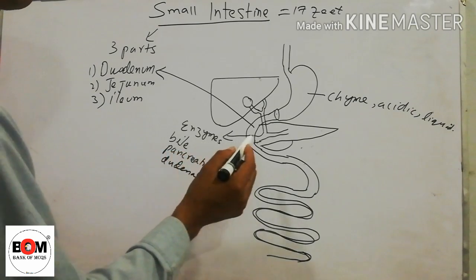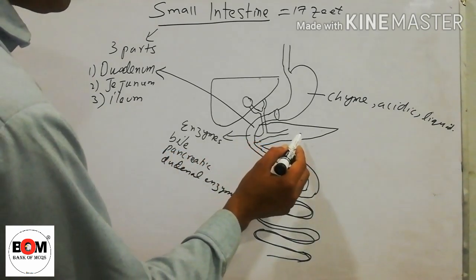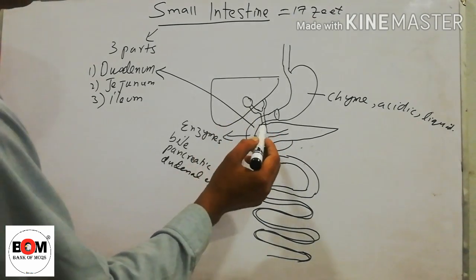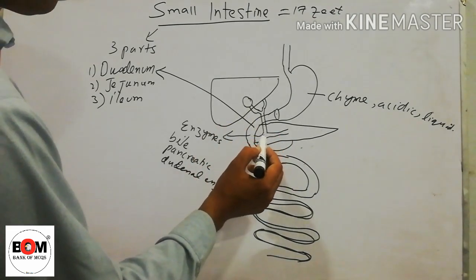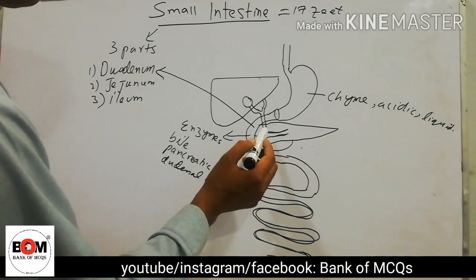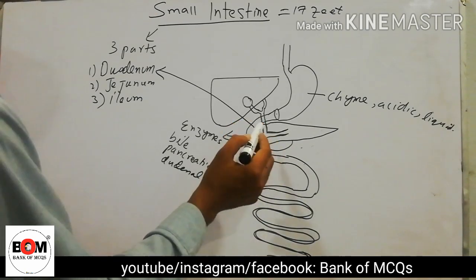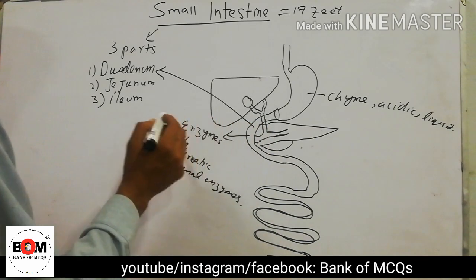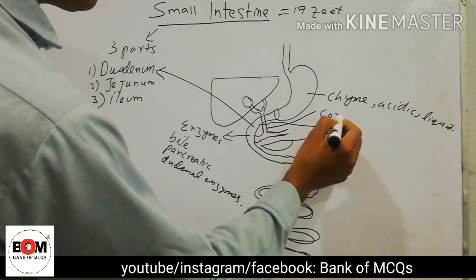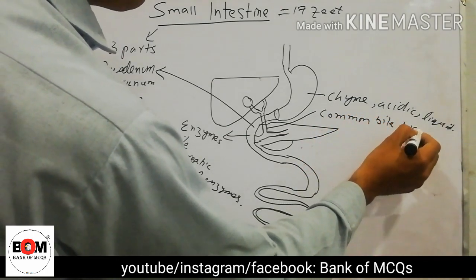So the duodenum receives ducts from the pancreas as well as from the liver. The pancreatic duct brings pancreatic enzymes, while the other duct comes from the liver and is called the common bile duct.